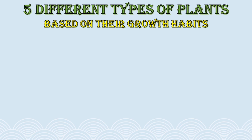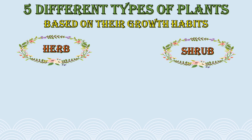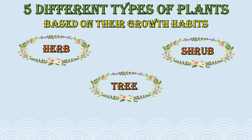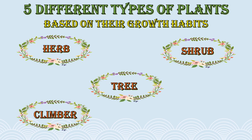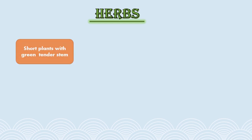Today we will talk about different types of plants based on their growth habit. The first one is herb, the second one is shrub, third one is tree, fourth one is climber, and the fifth one is creeper. Now let's learn more about these five different types of plants. Let's talk about herbs first.